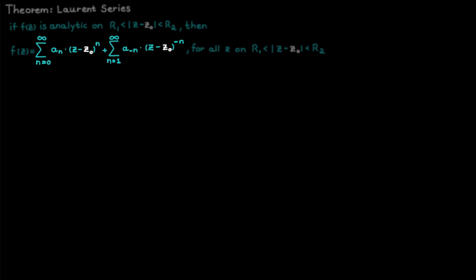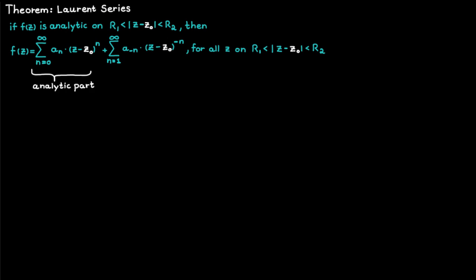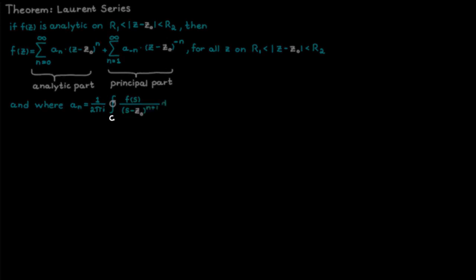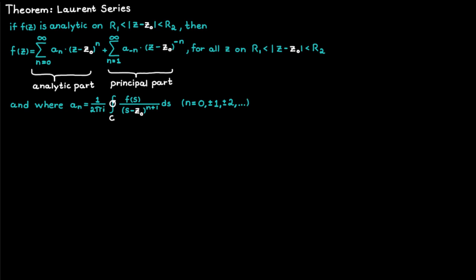The Laurent series is made up of two separate series. The first one, which includes all the positive powers of c minus c-naught, is called the analytic part, since this part will always be analytic. The second one contains all the negative powers of c minus c-naught and is called the principal part. The coefficients in the Laurent series can be determined by using an integral formula, where c is a closed curve inside the annulus surrounding c-naught.